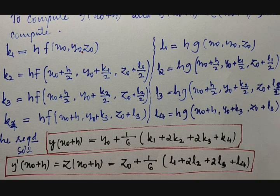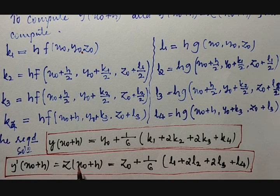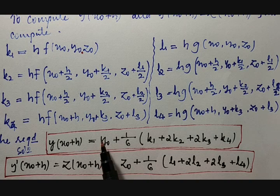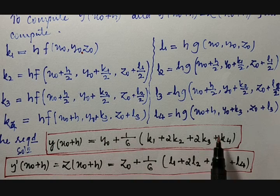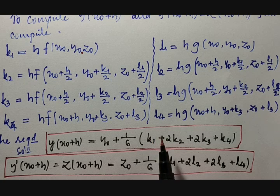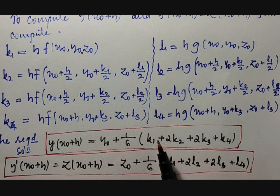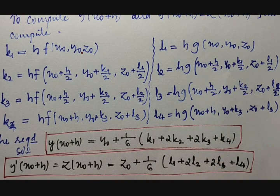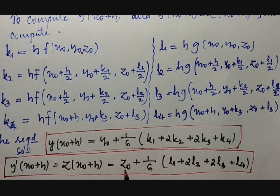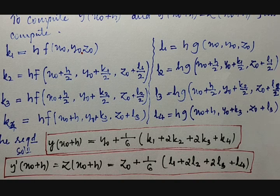For y'(x₀ + h), which is z(x₀ + h), the l values are used instead of k values. So z(x₀ + h) = z₀ + (1/6)(l1 + 2l2 + 2l3 + l4). The k values are used to get the value of y, and the l values are used to get the value of z.